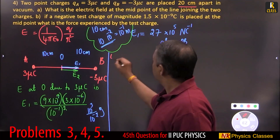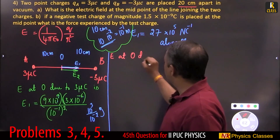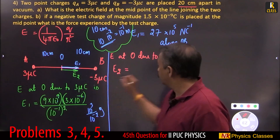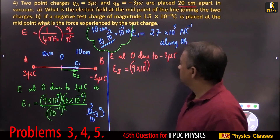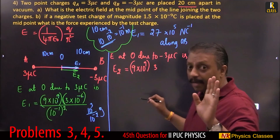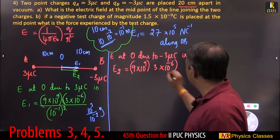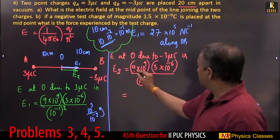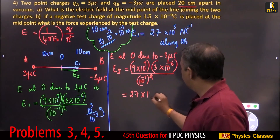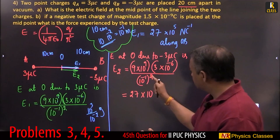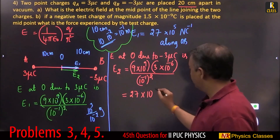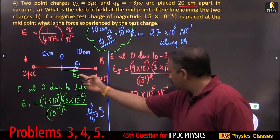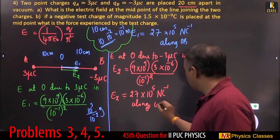Next, E2: electric field at O due to minus 3 micro coulomb. Using the same formula with constant 9 times 10 to the power 9, E2 also equals 27 times 10 to the power 5 Newton per coulomb. The direction of E2 is also along OB.